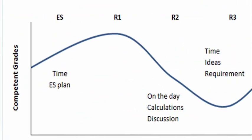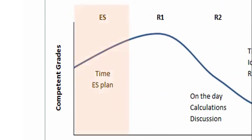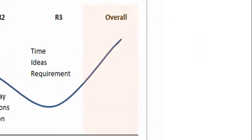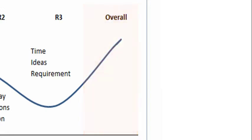In the fourth element, the executive summary, students again tend to run out of time, or they don't have a plan, and so they don't cover all the requirements to the right level of detail. And finally, in the fifth element, most students competently present their report and appendices.